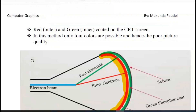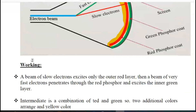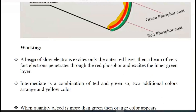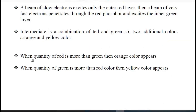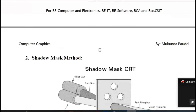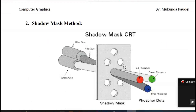Now let's explain the working mechanism of the shadow mask method. Looking at the figure, shadow mask one — the shadow mask uses a different approach compared to the beam penetration method.